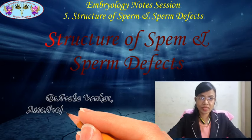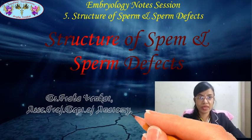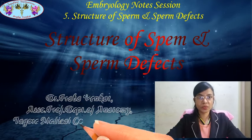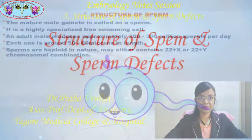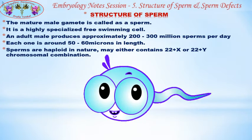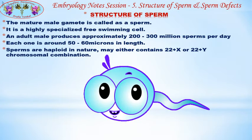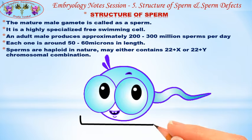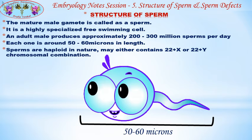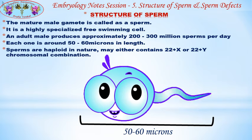Good day all. In this embryology node session, we are providing notes for the structure of the sperm and sperm defects. The mature male gamete is called a sperm — it is a highly specialized, free-swimming cell. An adult male produces approximately 200 to 300 million sperms per day, each one around 50 to 60 microns in length. Sperms are haploid in nature and may either contain 22 plus X or 22 plus Y chromosomal combination.